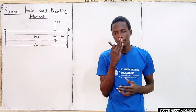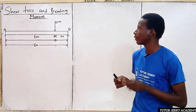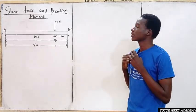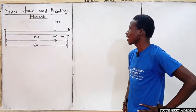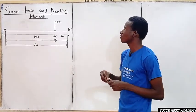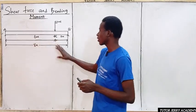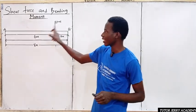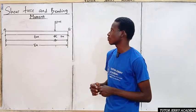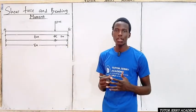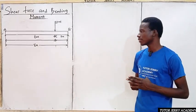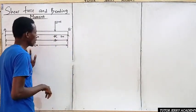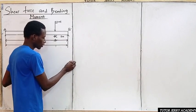Hello and welcome. We are going to be solving a simply supported beam problem. This beam has a length of 8 meters and is carrying a concentrated load of 2 kilonewtons that is not at the midspan. We are going to be drawing the shear force and bending moment diagram, but first we need to do some calculations.